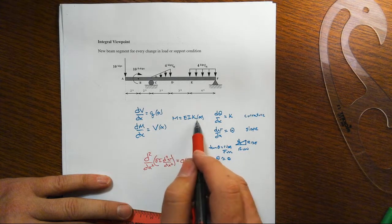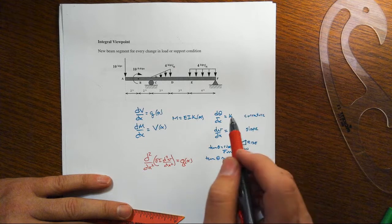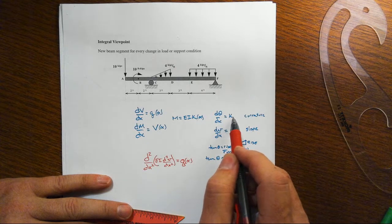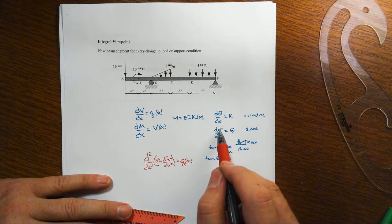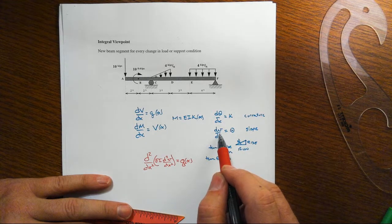Then we have the moment curvature relationship, and then we have that curvature is the first derivative of the slope, and the slope of course is the first derivative of the deflected shape.